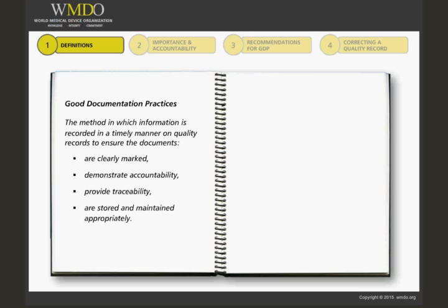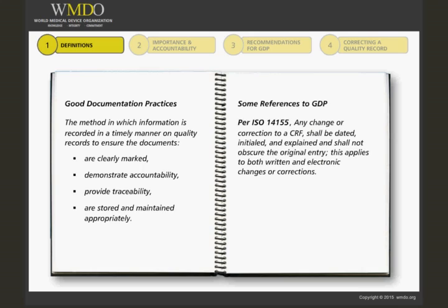Per ISO 14155, any change or correction to a CRF shall be dated, initialed, and explained if necessary, and shall not obscure the original entry. That is, an audit trail shall be maintained. This applies to both written and electronic changes or corrections.